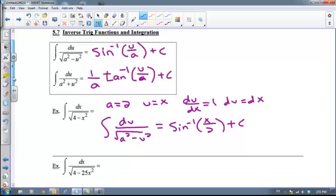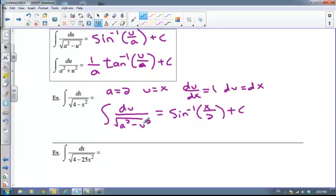So that was a nice, easy example. Let's take a look and see what happens if du is not exactly equal to dx. Again, I've got a fraction, a square root in this form. And so it looks like this top equation, but let's go through our substitution and see what each thing will be. Our a would be 2 again. Our u would be 5x, because 5x, when you square it, you square the 5, and you square the x, you get 25x squared.